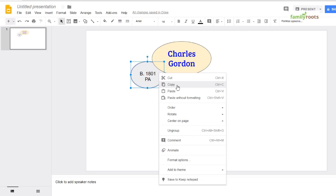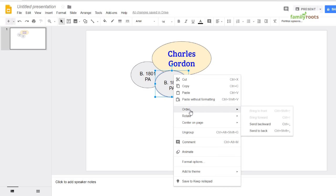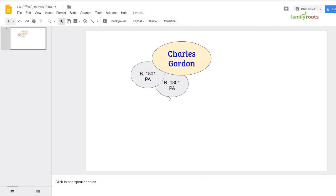I can right click copy, right click paste, and now I have two ovals. It always pops to the front, so go order, send it back. And now I can put the death date in, who died, let's say 1873 in Ohio.